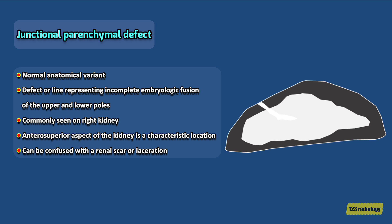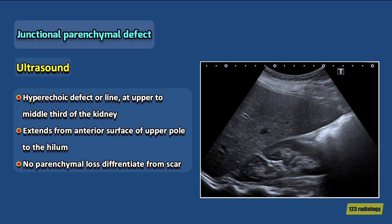Junctional parenchymal defect is a normal anatomical variant of the kidney. It is a defect or line representing incomplete embryologic fusion of the upper and lower poles of the kidney. This normal variant is more commonly seen on the right kidney. The anterosuperior aspect of the kidney is a characteristic location for junctional parenchymal defect. This anatomical variant can be confused with a renal scar or laceration. On ultrasound, junctional parenchymal defect appears as a hyperechoic defect or line at the upper to middle third of the kidney, extending from the anterior surface of the upper pole into the hilum. No associated parenchymal loss is a useful sign to differentiate this normal variant from cortical scar.